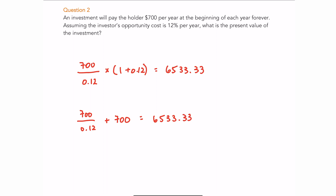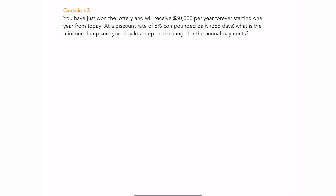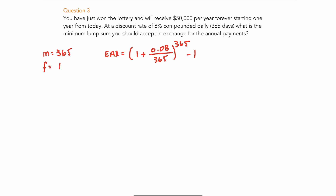Question number three: you've won the lottery and will receive $50,000 per year forever starting one year from today — an ordinary perpetuity. The discount rate is 8% compounded daily (365 days), and the payment frequency is one per year. We need to first find the effective annual rate: take (1 + nominal rate / 365) to the power of 365, minus one. You should get an EAR of 0.0832776. I'm keeping many decimal places to minimize rounding errors.